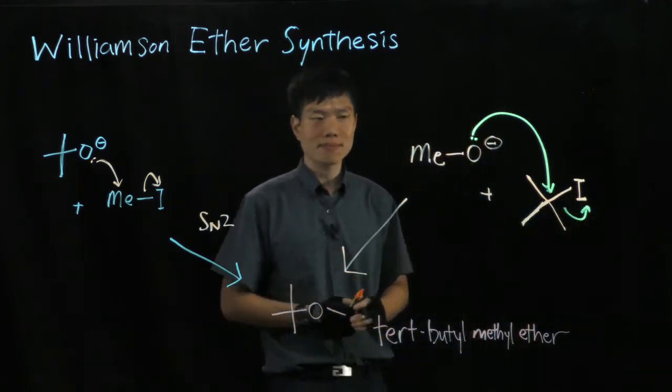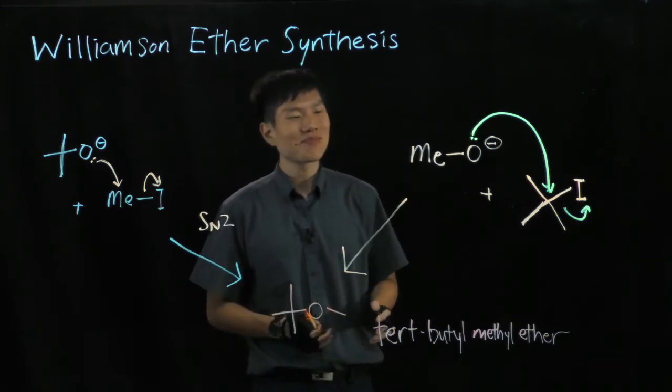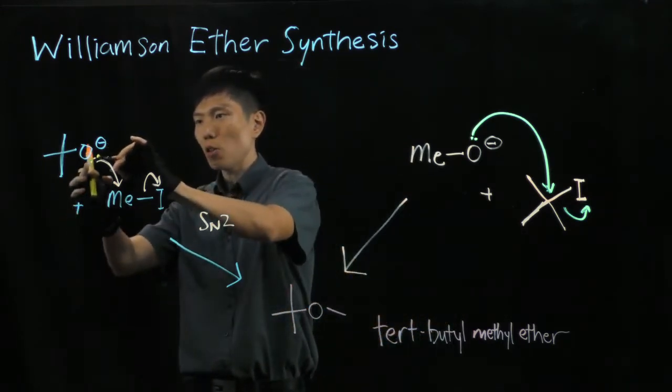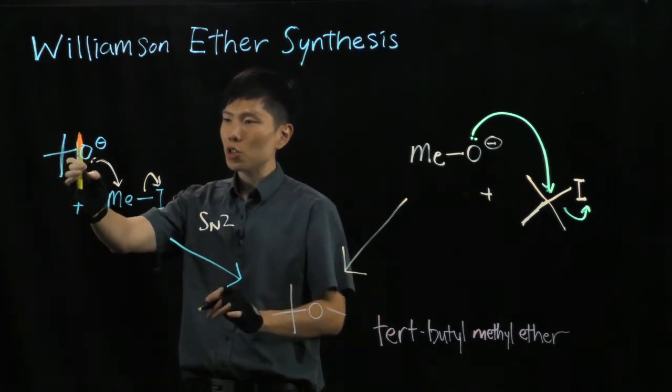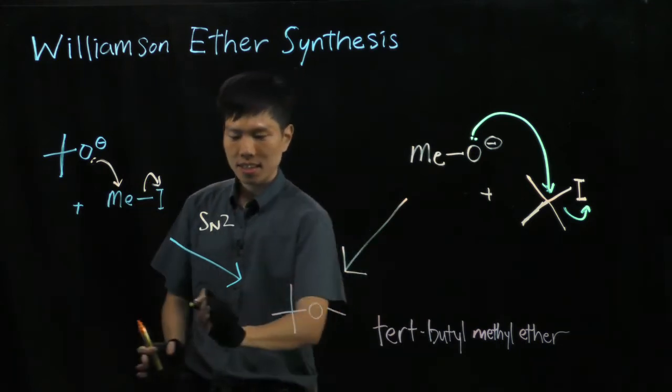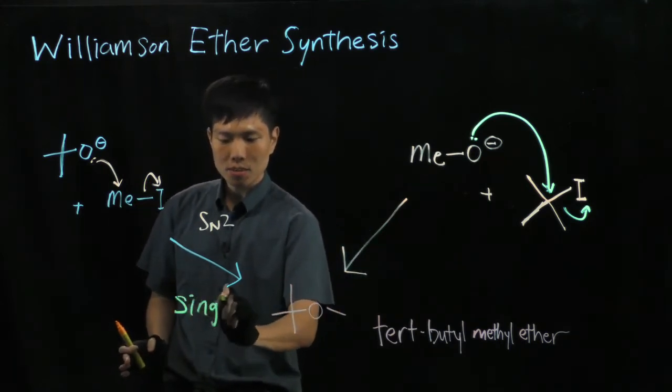Which is better? Let's analyze. For this case, the lone pair of this nucleophile just attacks this methyl, removes the iodide and this is the only product you can get. You get a single product.